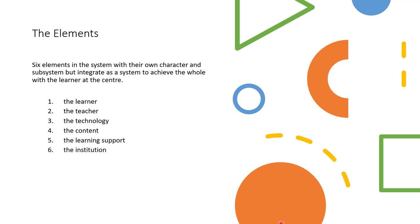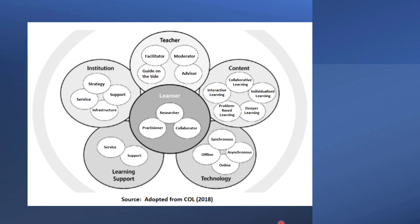Now let's see how they interrelate. Looking at this diagram here, you could find the teacher, the content, technology, learning support, institution, and the learner at the center. The teacher comes in as a facilitator, as a moderator, as a guide on the side, as an advisor. The content is designed to allow for collaborative learning, individualized learning, deep learning, problem-based learning, interactive learning, and the technology is provided as being synchronous and asynchronous. The technology could be offline and at the same time it could be online.